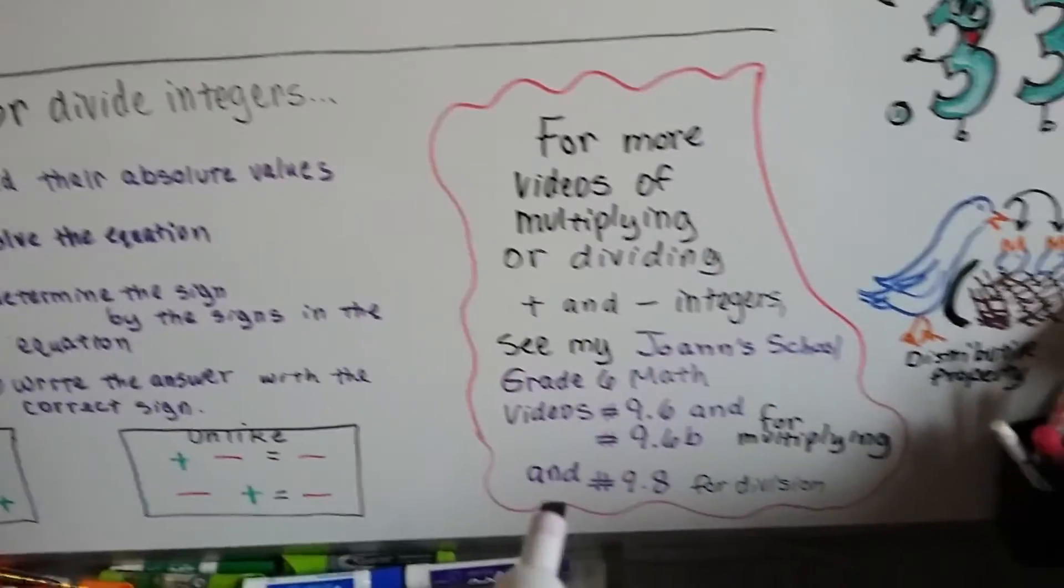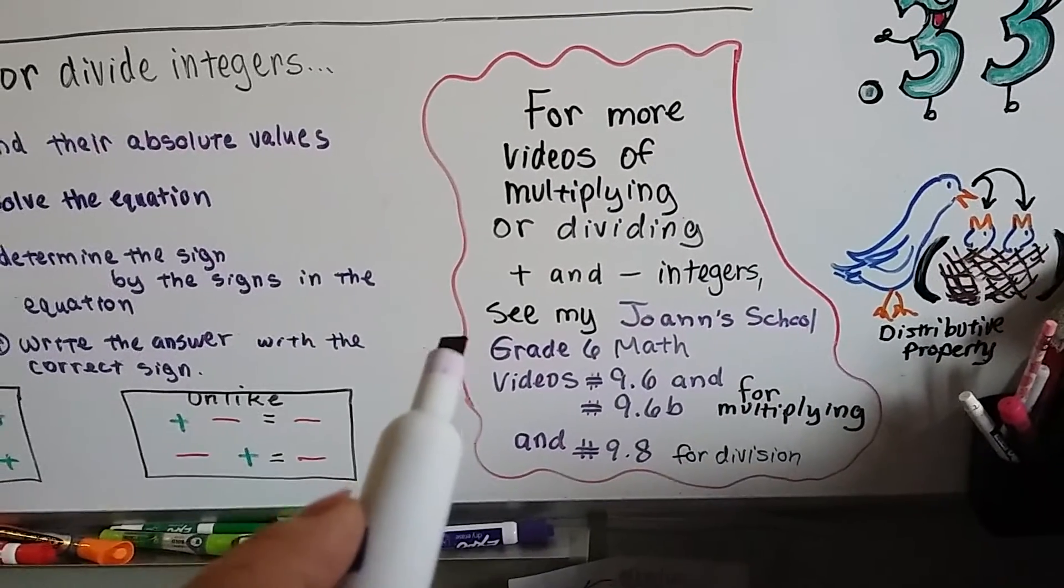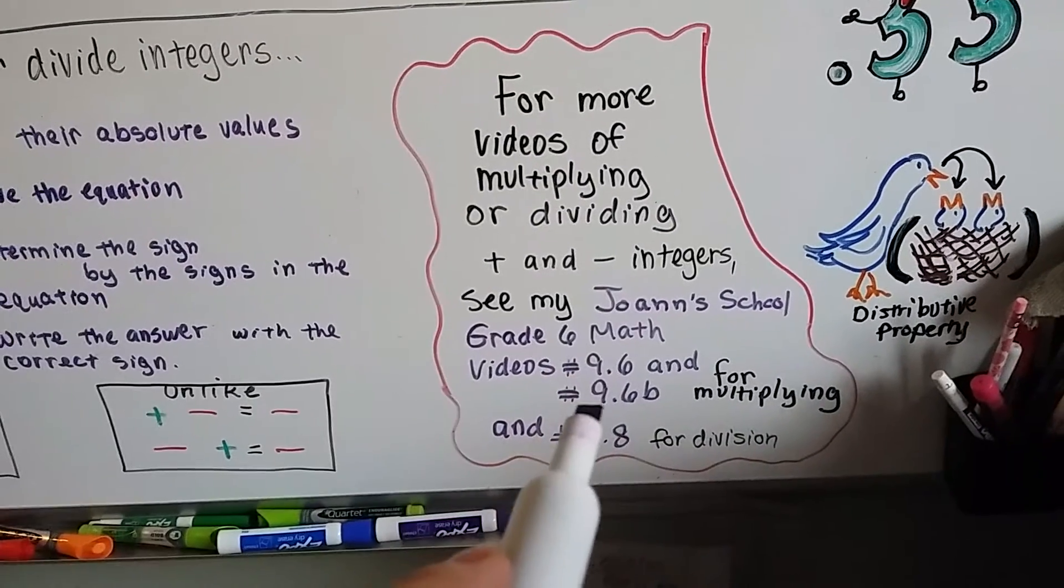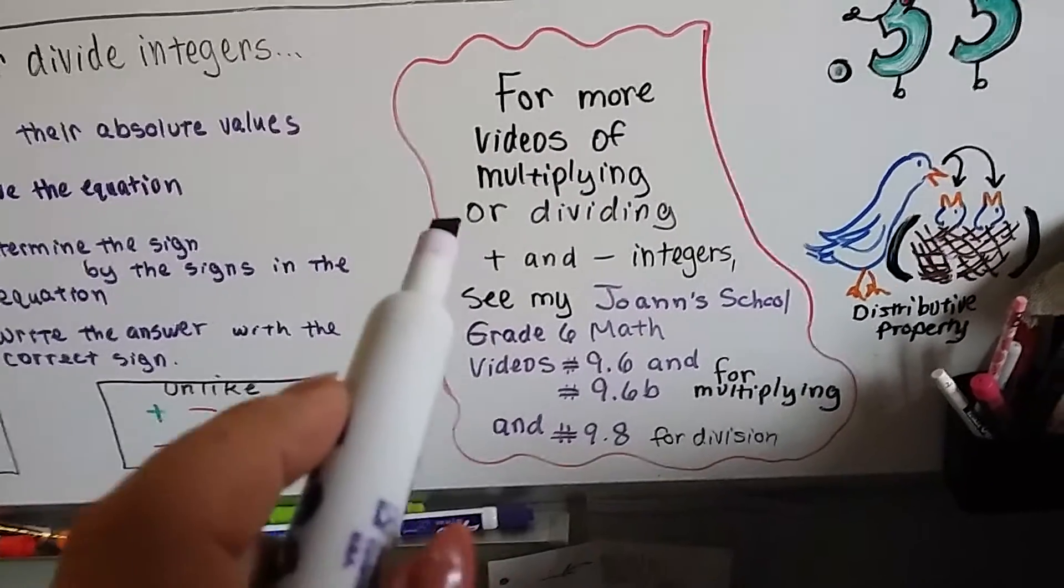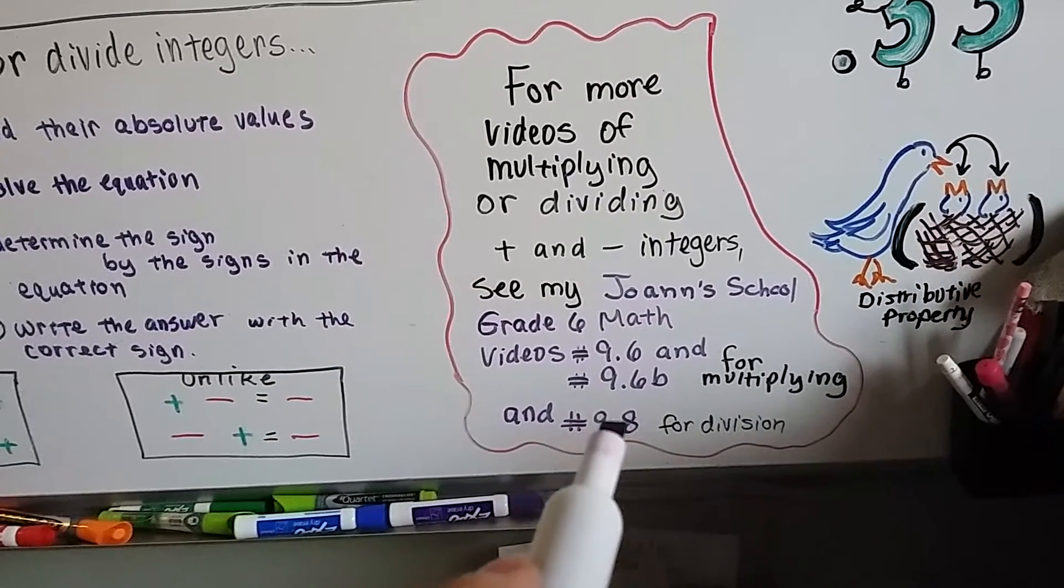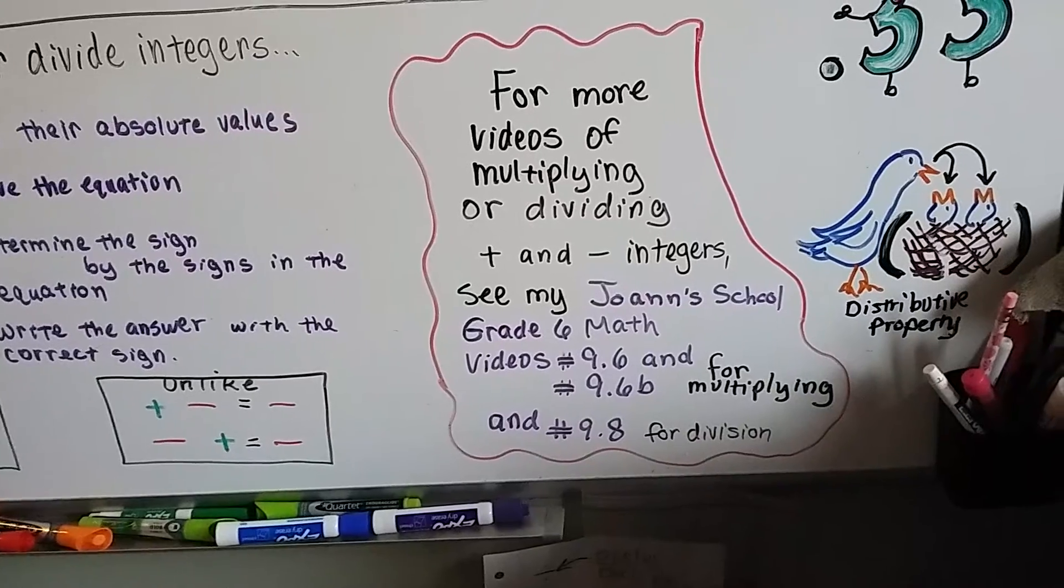If you're still having problems, I advise you to go to my Joanne School grade 6 math playlist and look up videos 9.6 and 9.6b for multiplying integers that are positive and negative, and 9.8 for the division of integers.